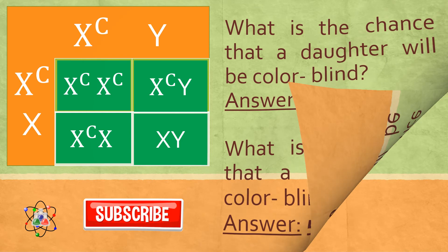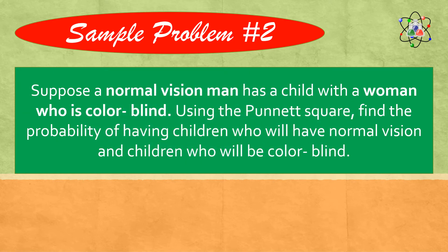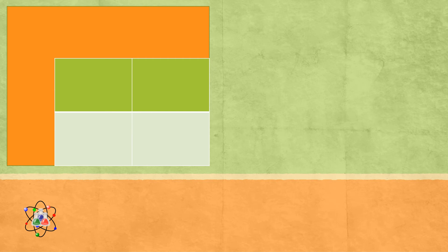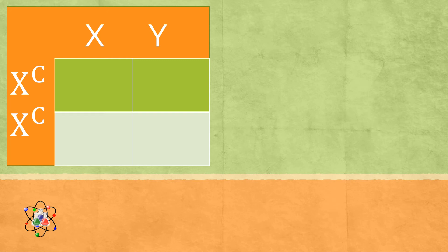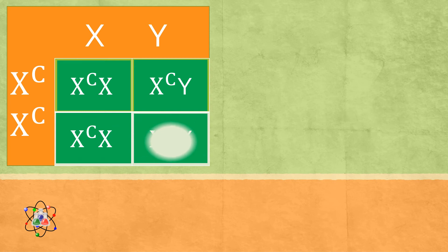Let us now proceed to sample problem number 2. Suppose a normal vision man has a child with a woman who is colorblind. Using the Punnett square, find the probability of having children who will have normal vision and children who will be colorblind. Remember, X is for normal vision and XC is for being colorblind. By using this Punnett square, let us cross the parents. According to the problem, the father has normal vision, represented as XY, and the mother is colorblind, represented as XCXC. By multiplying the alleles, we will have XCX, XCY, XCX, and XCY.